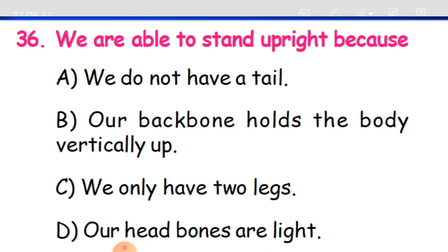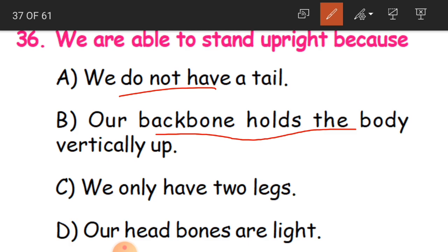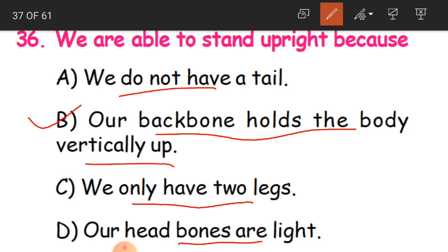Question 36: We are able to stand upright because - the options are: we do not have a tail, our backbone holds the body vertically up, we only have two legs, or our head bones are light. The correct answer is B - our backbone holds the body vertically up. Animals cannot stand upright; only penguins can.